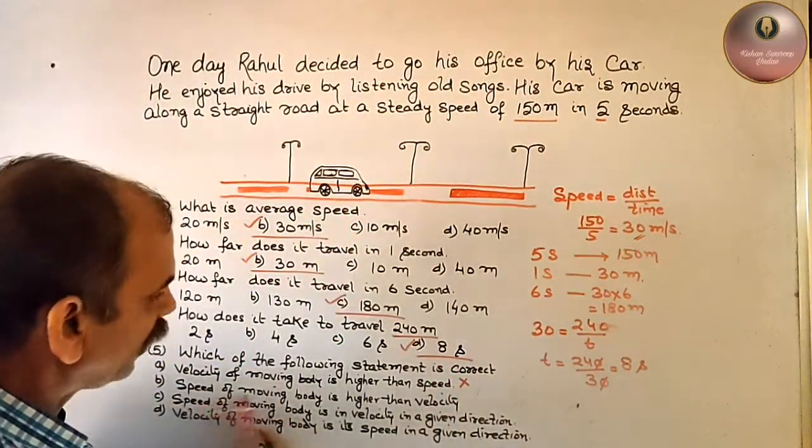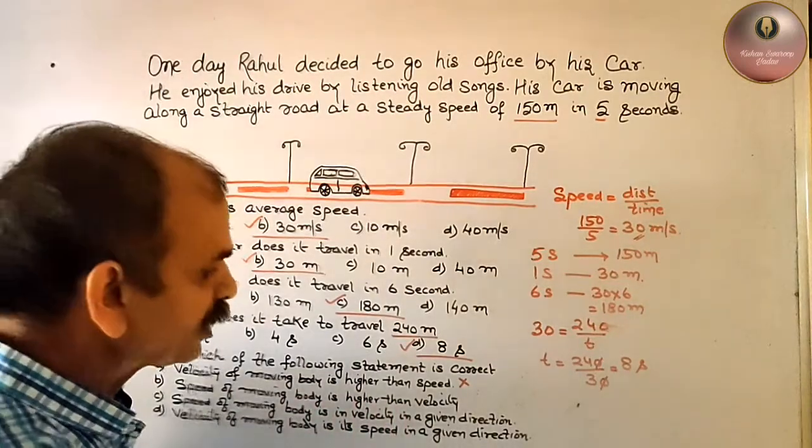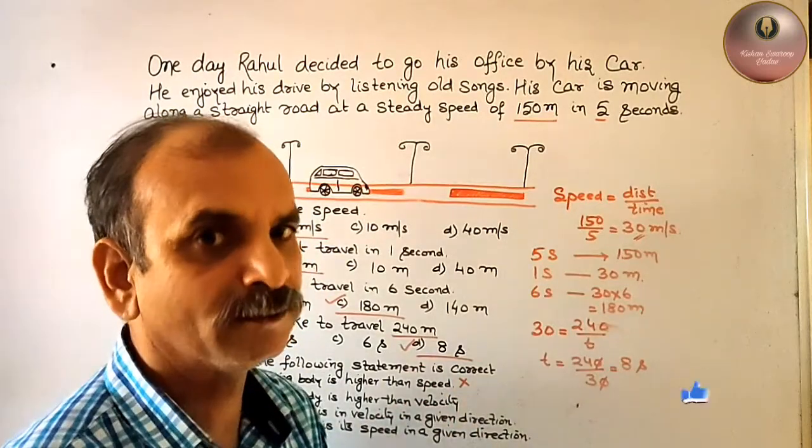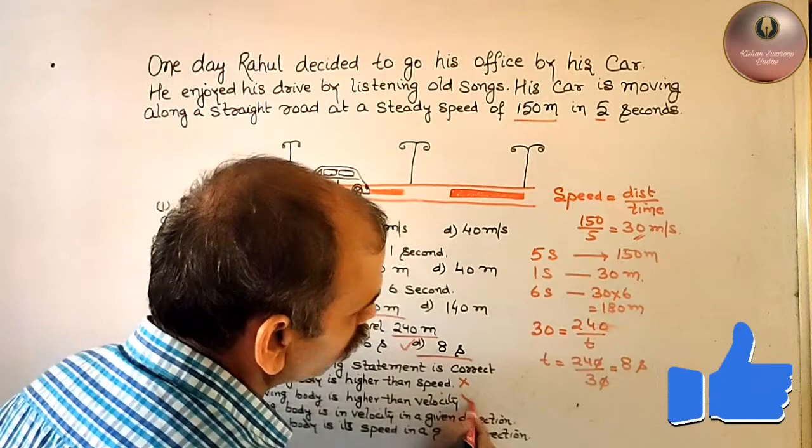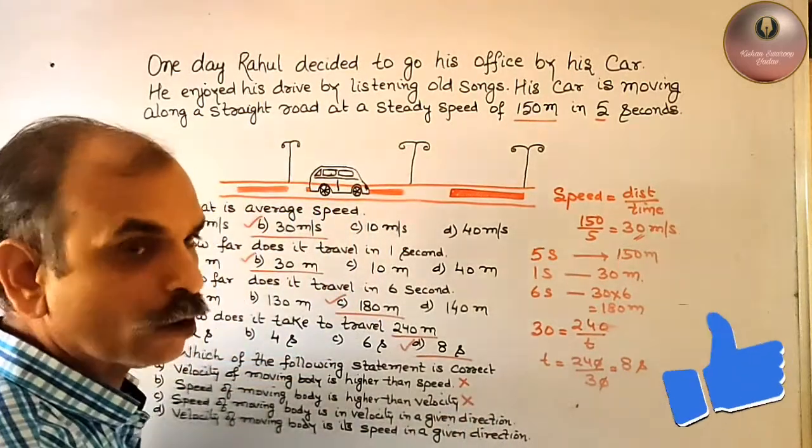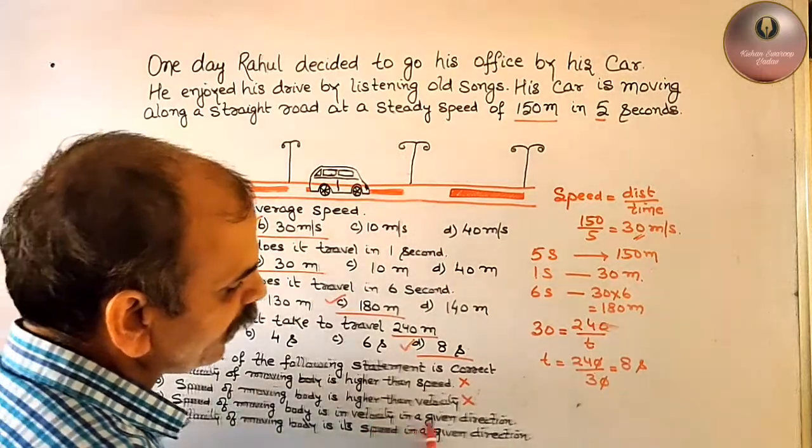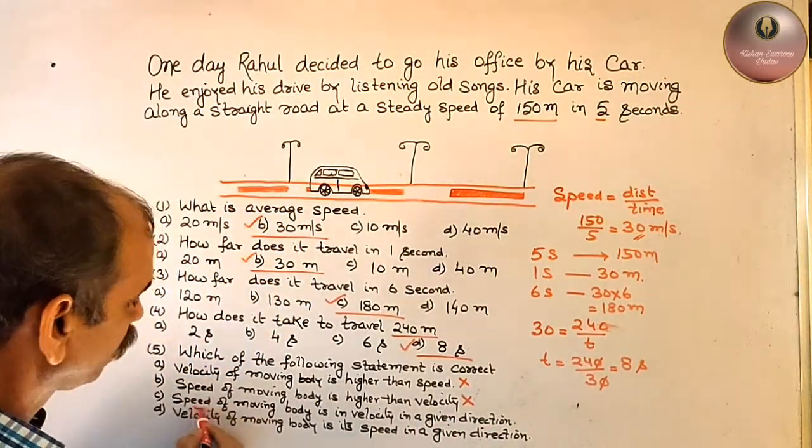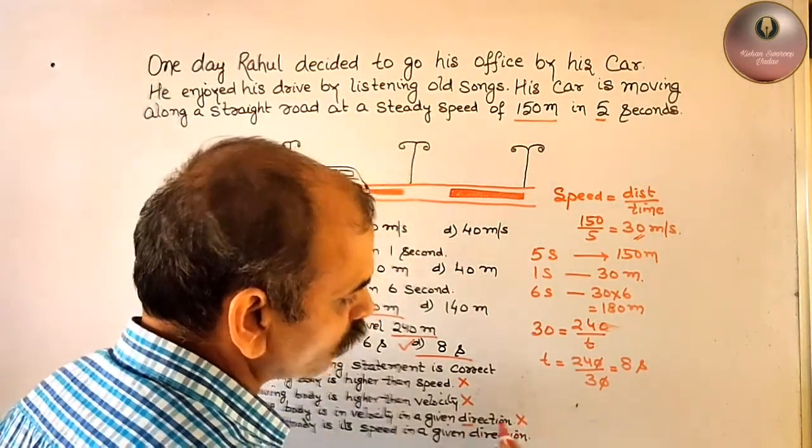Second, speed of moving body is higher than velocity. This is the only statement that means it is also wrong. Speed of the moving body is in velocity in a given direction. We know that speed has no direction, so here they have given direction that means it is also wrong.